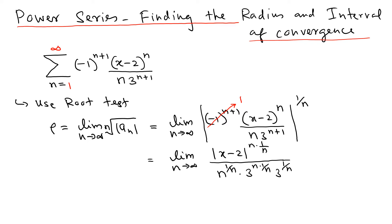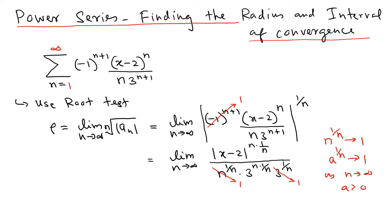As n goes to infinity, several terms go to 1. We know two key results: the nth root of n goes to 1, and for any positive constant a, the nth root of a goes to 1 as n goes to infinity. So the nth root of n goes to 1, the nth root of 3 to the n goes to 3, and the nth root of the constant 3 goes to 1. These terms cancel and simplify.